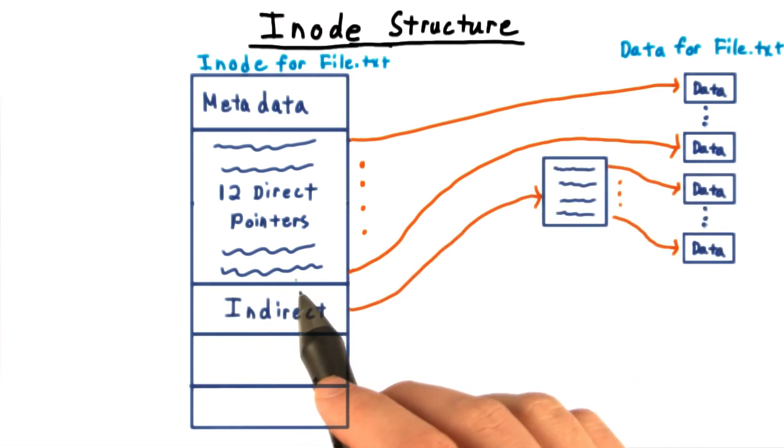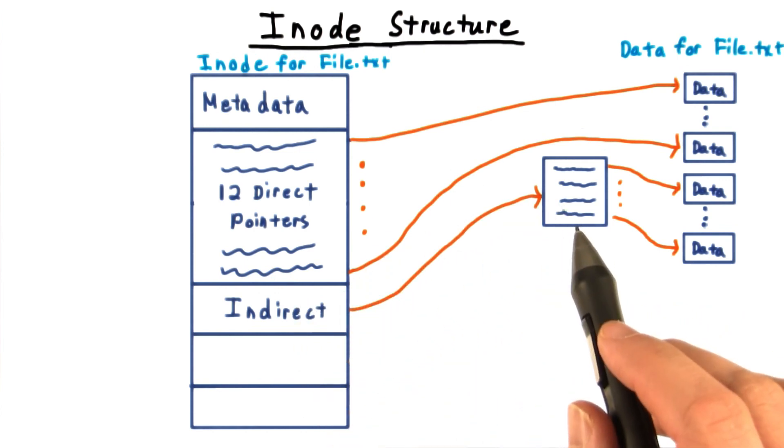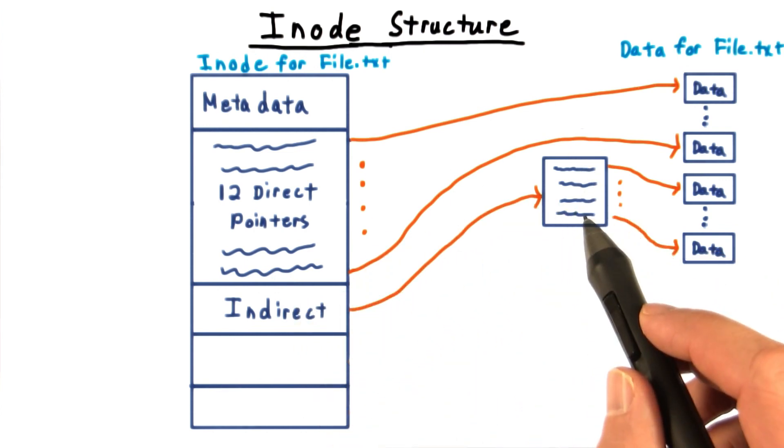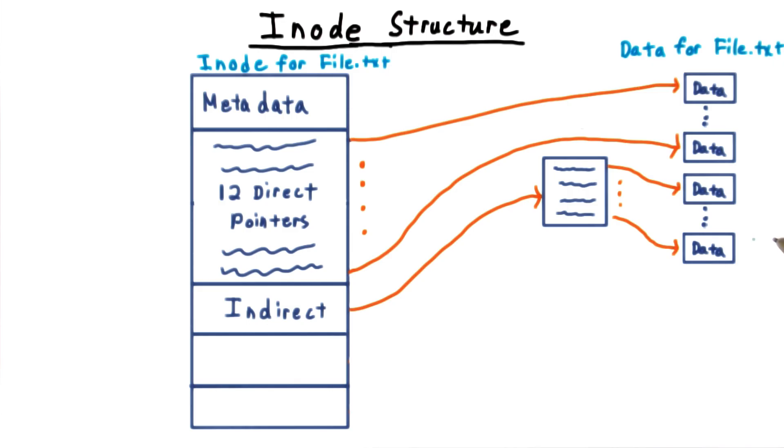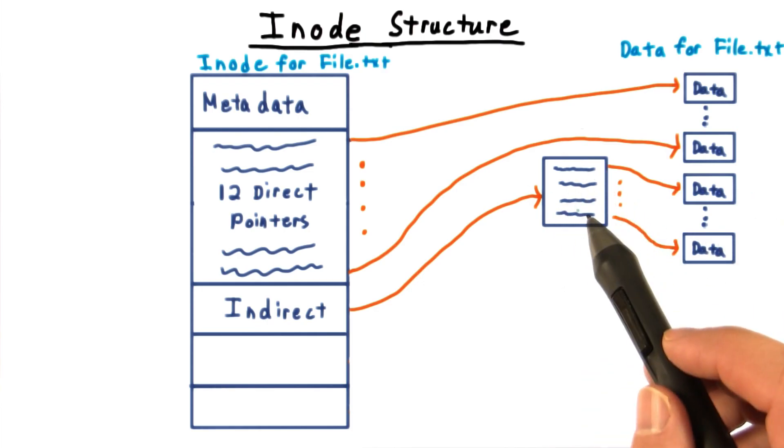The 13th of these addresses points to a block that consists of a table of addresses for the next blocks in the file. This vastly increases the number of blocks that we can use in a file. The downside is that we've introduced a layer of indirection.